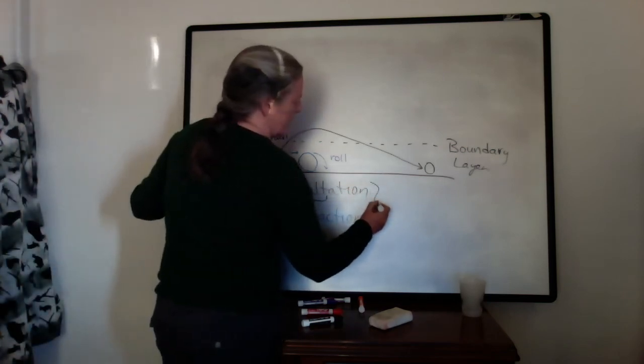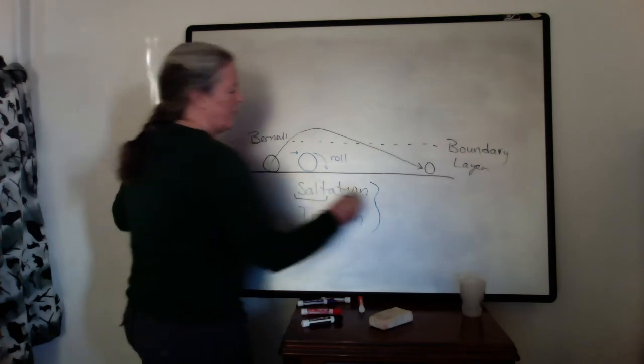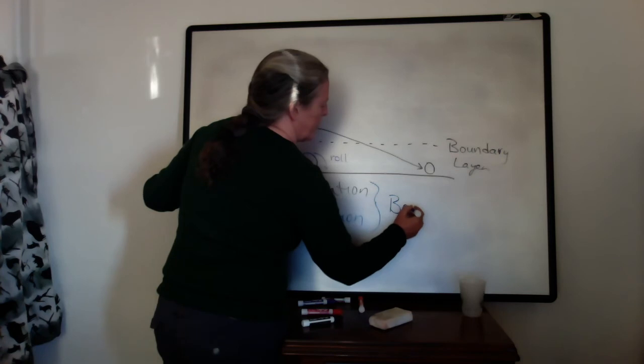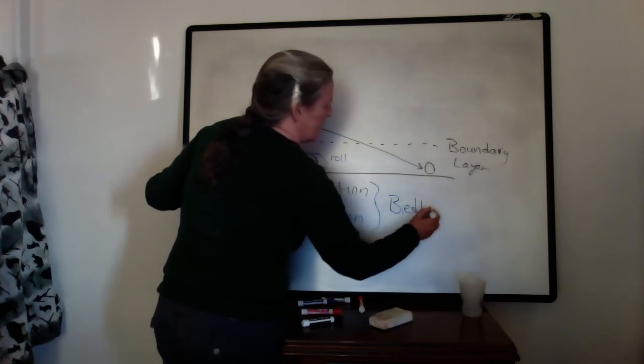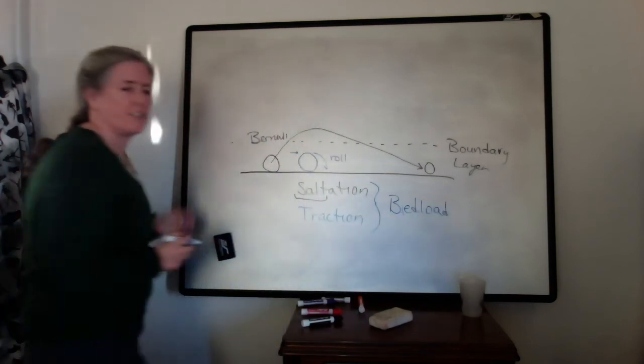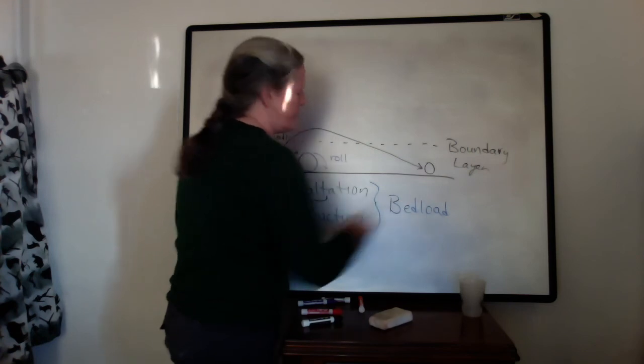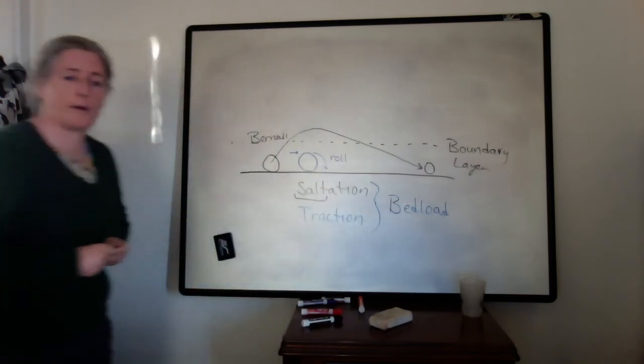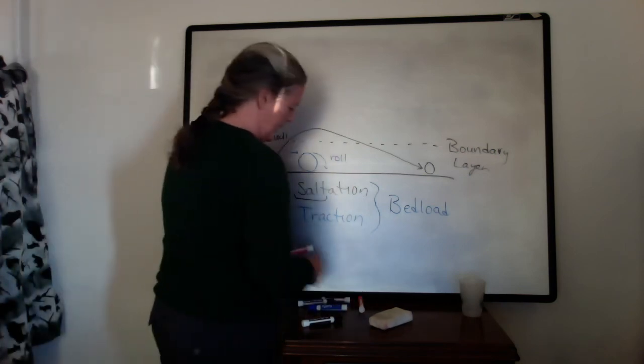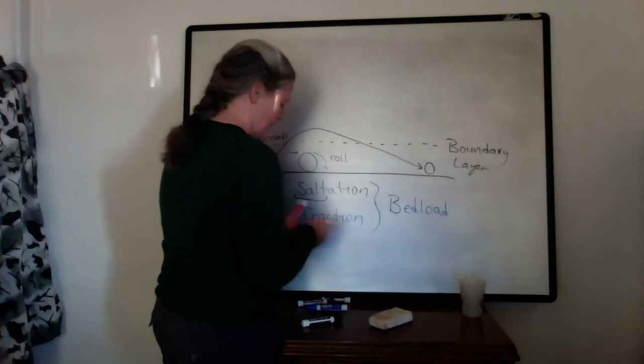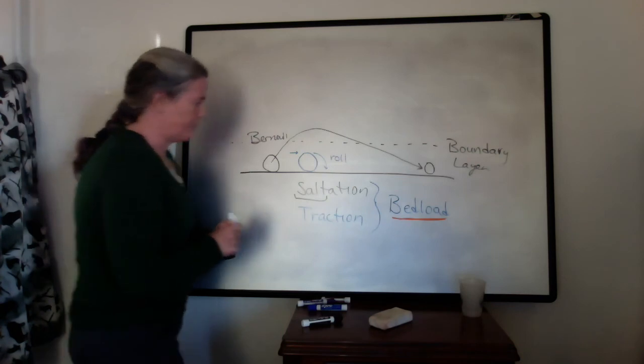And so these grains, these two types of grains, both stay very close to the bed, and then we call them bed load. And that's an engineering term. The load is sort of a measure of how much sediment gets transported that way. So this is one of our key methods for the way sediment is transported, and it has these two parts: saltation and traction.